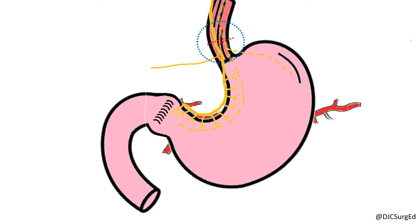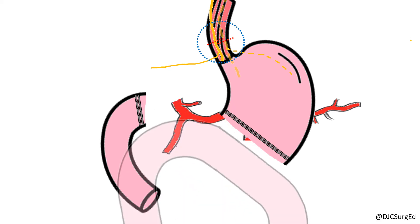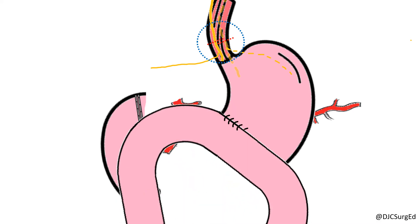A highly selective vagotomy preserves vagal innervation to the pylorus, so no drainage procedure is required. An antrectomy is typically performed for gastric rather than duodenal ulcers in combination with a vagotomy.